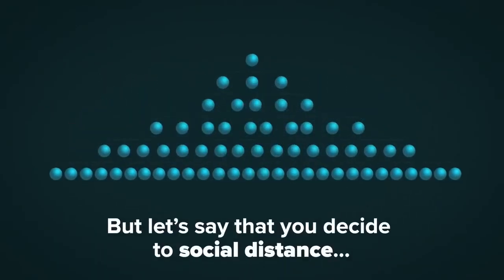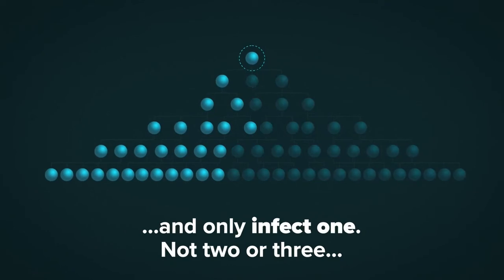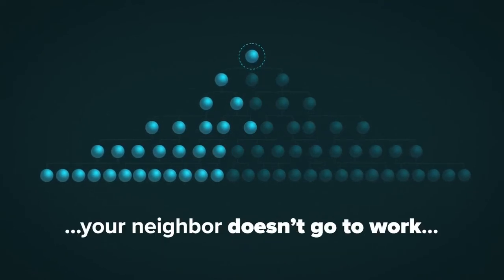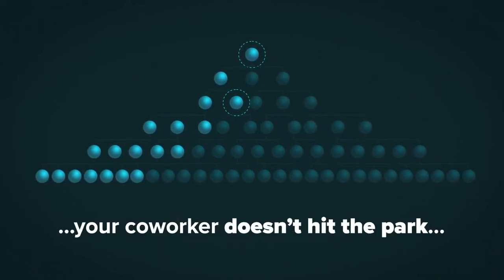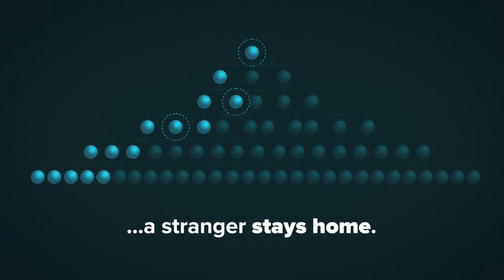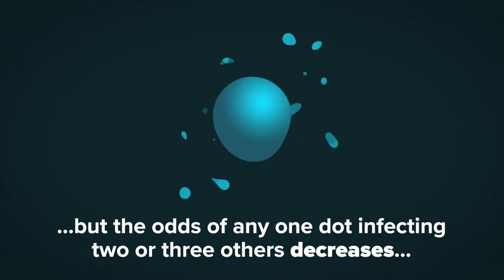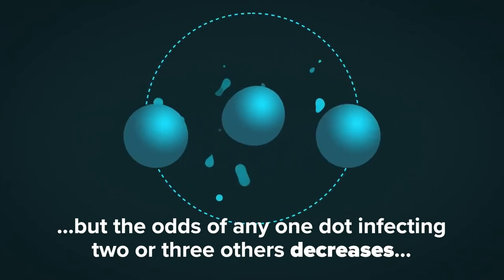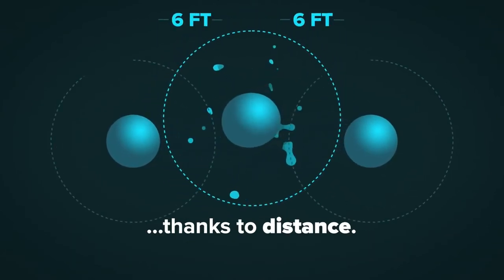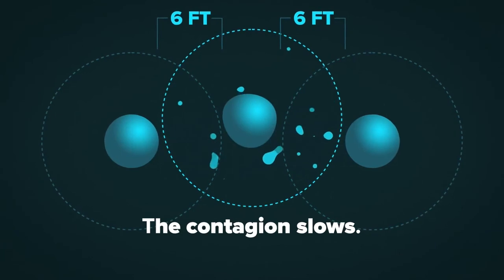But let's say you decide to social distance and only infect 1, not 2 or 3. Your neighbor doesn't go to work, your coworker doesn't hit the park, a stranger stays home. Infections can still happen, but the odds of any 1 dot infecting 2 or 3 others decreases. Thanks to distance, the contagion slows.